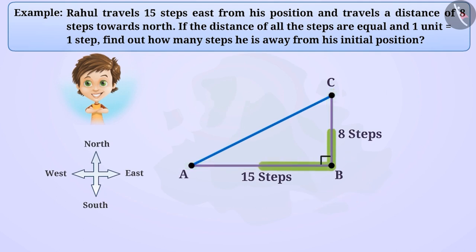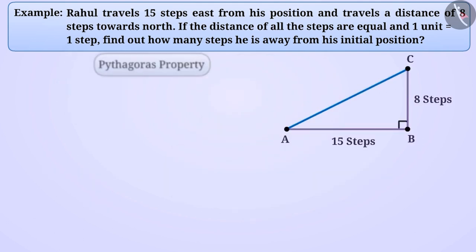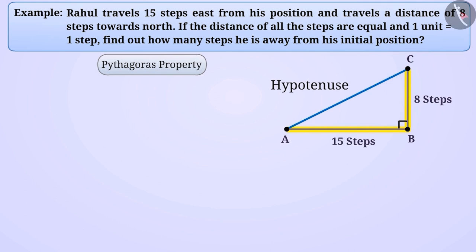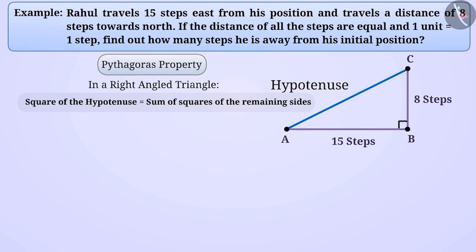In triangle ABC, we know the measurement of two sides. Therefore, by using the Pythagoras property, we will find the measurement of the third side, that is the hypotenuse AC. Here, AC is the hypotenuse and AB and BC are the remaining sides. According to the Pythagoras property, in a right triangle, the square of the hypotenuse is equal to the sum of the squares of the remaining sides.